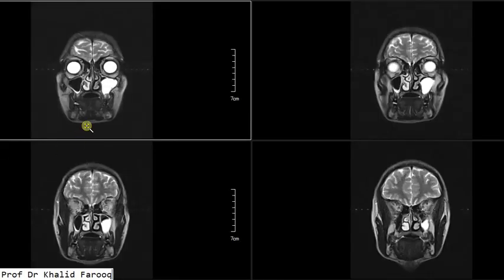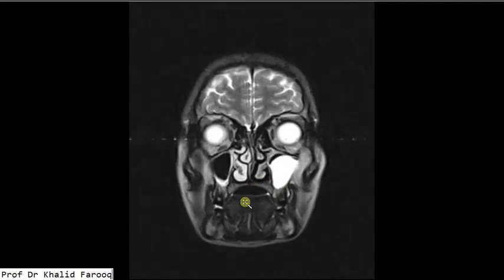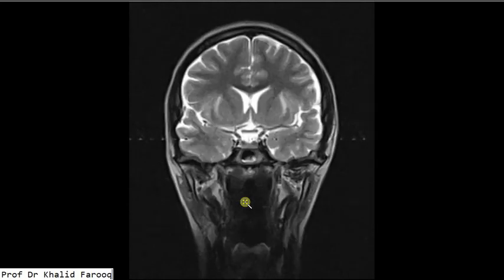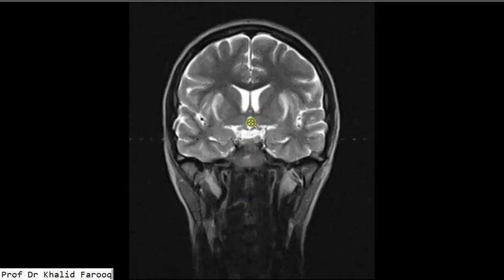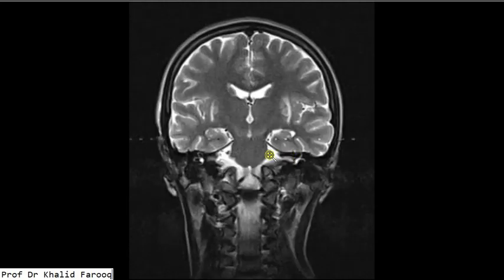Let's see the coronal T2-weighted sequence. Here we can see both eyeballs, incidental findings in the left piriform sinus, mild DNS, frontal horns of the lateral ventricle, part of the third ventricle, and abnormal signals in both sides which are almost symmetrical once again.